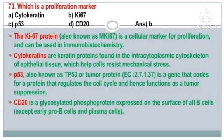The Ki67 protein is a cellular marker for proliferation and can be used in immunohistochemistry. Cytokeratins are keratin proteins found in the intracytoplasmic cytoskeleton of epithelial tissue, which helps cells resist mechanical stress. p53, also known as tumor protein, is a gene that codes for a protein that regulates the cell cycle and hence functions as a tumor suppressor. CD20 is a glycosylated phosphoprotein expressed on the surface of all B cells.